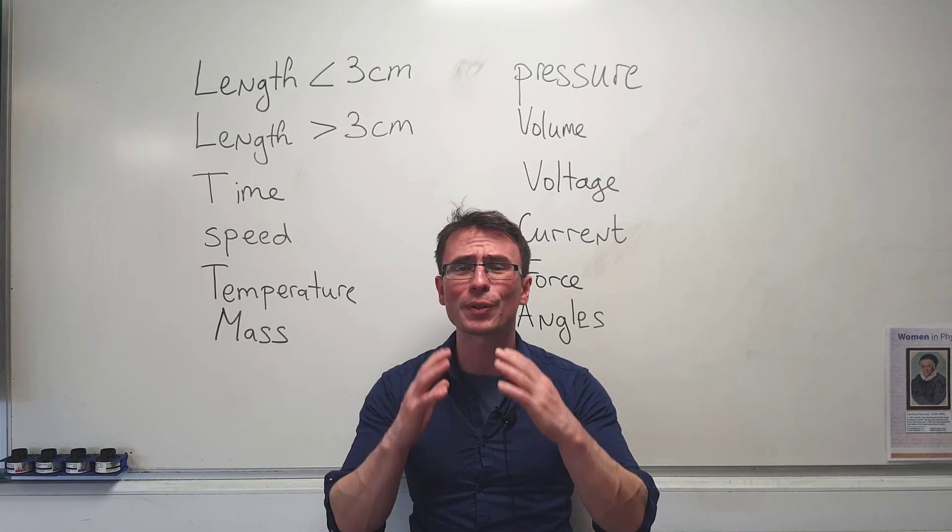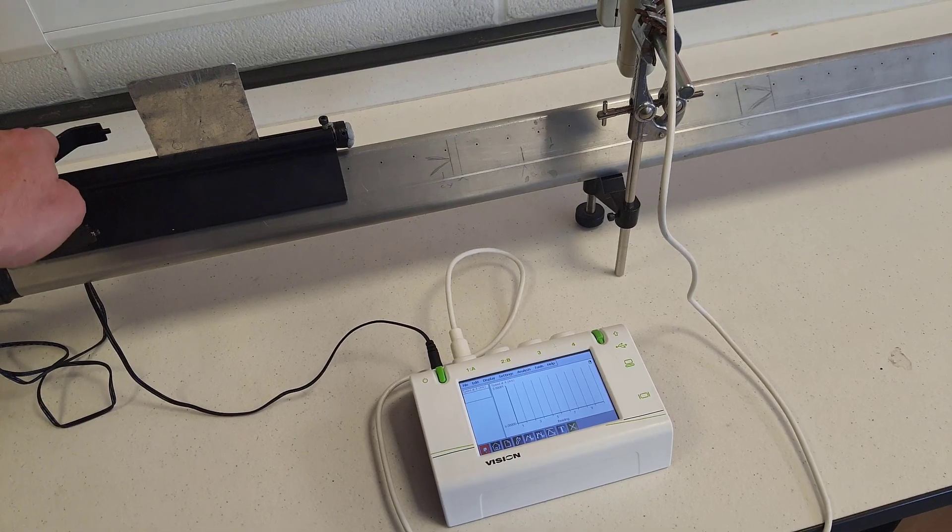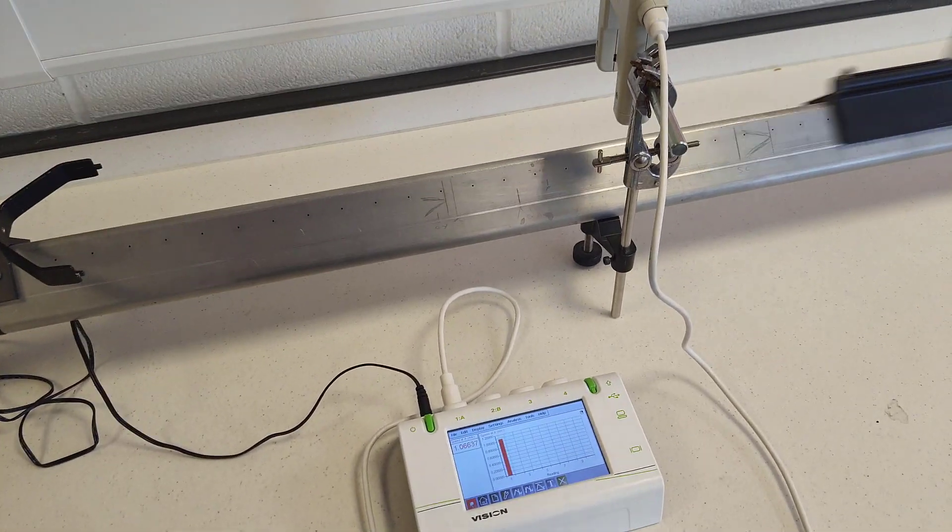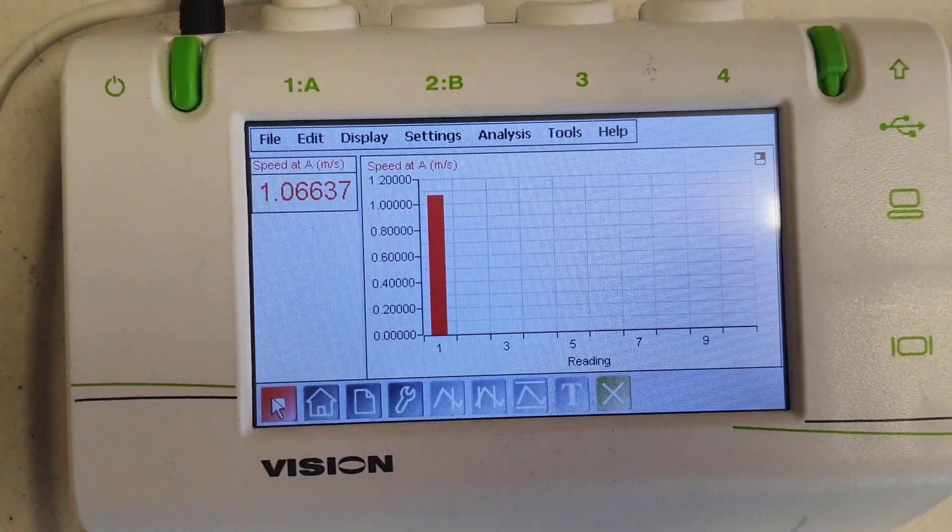Talking about light gates, we could also directly measure the instantaneous speed of an object at a given point using light gates.